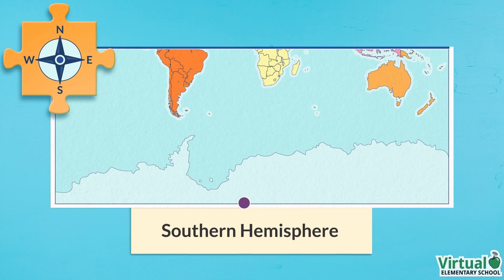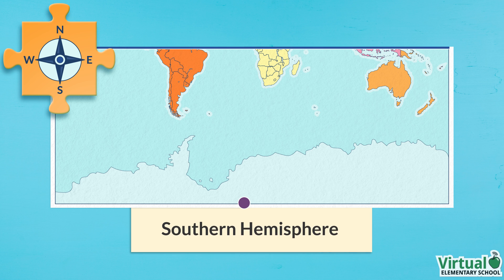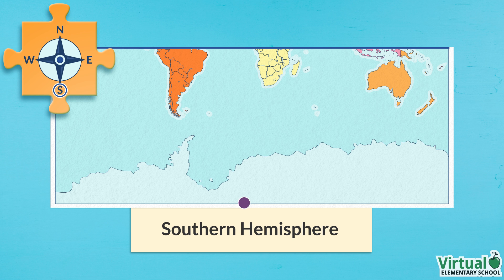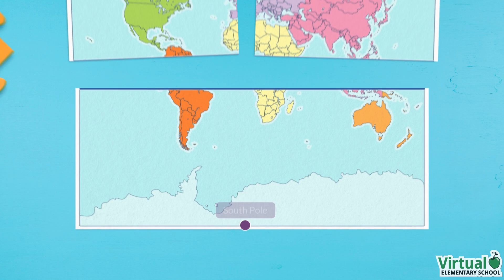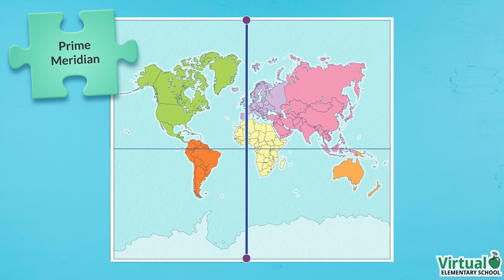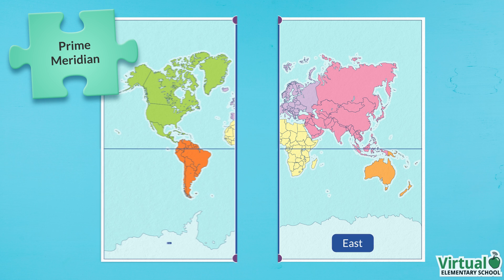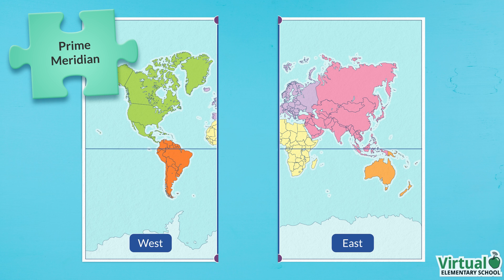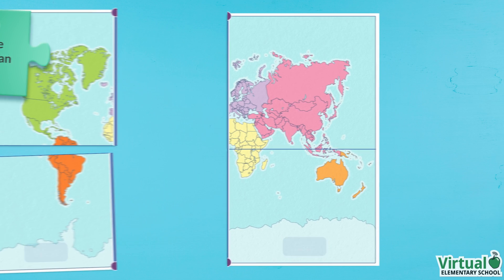The area below the equator is called the southern hemisphere. On the compass rose, we see that S is circled to identify the area south of the equator. The most southern point in the world is the South Pole. There is another imaginary line called the prime meridian — it divides the earth into eastern and western hemispheres.